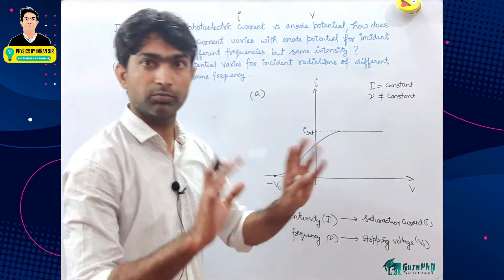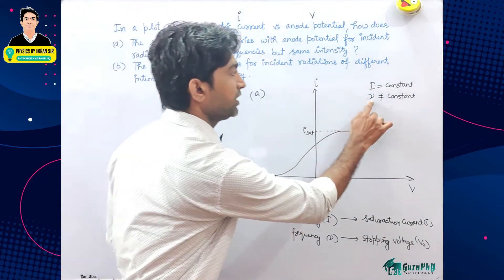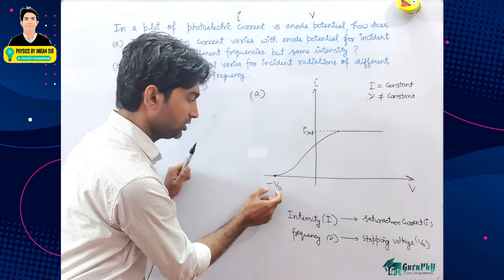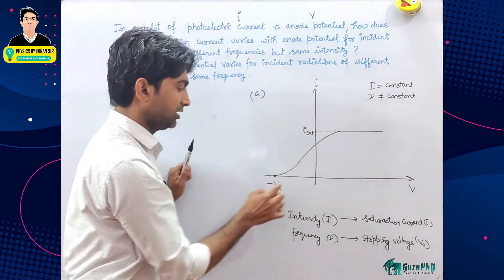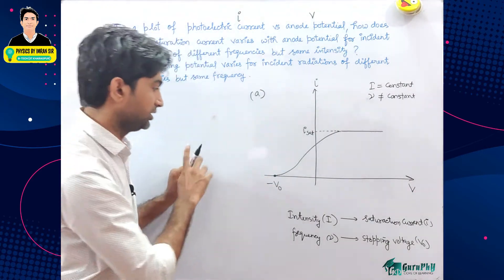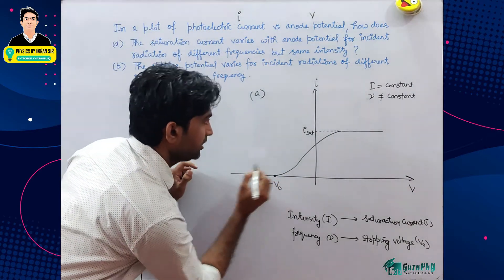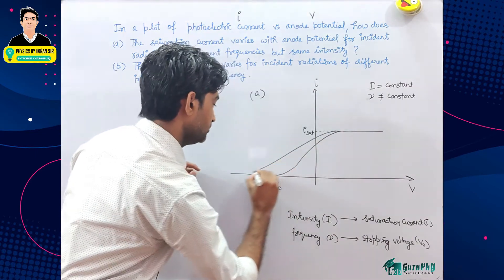Agar intensity constant rakhein, to saturation current wo to badalegi nahi, wo rahegi constant. Frequency constant nahi hai to stopping voltage ab wo badal jayegi. Agar frequency zyada karte hain to voltage bhi zyada ho jati hai.